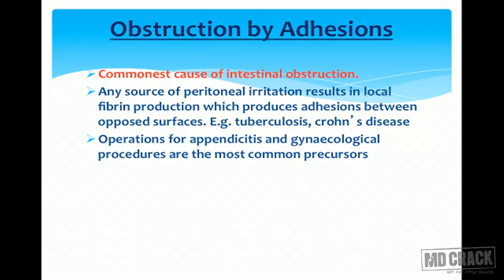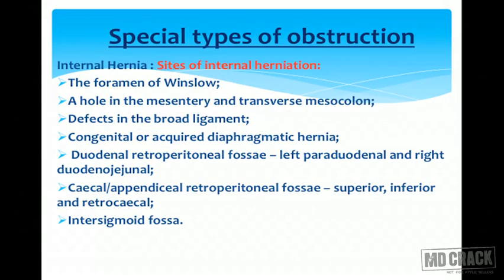Examples include tuberculosis or Crohn's disease. Operations for appendicitis and gynecological procedures are the most common precursors. In internal hernia, the sites of internal herniation are the foramen of Winslow, a hole in the mesentery and in the transverse mesocolon, and a defect in the broad ligament.